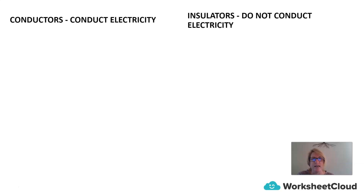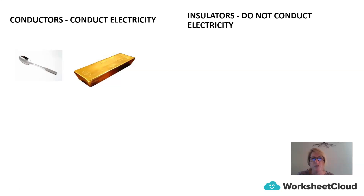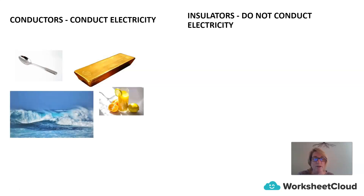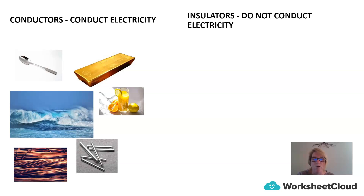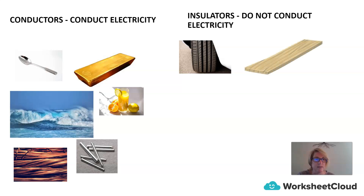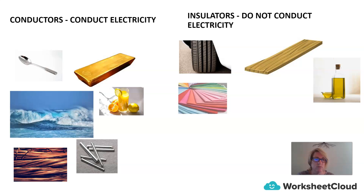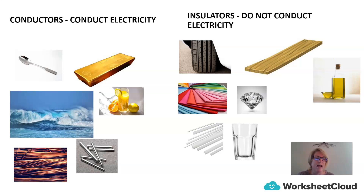When we look at electricity, it's important to look at the difference between conductors and insulators. A conductor is something that can conduct electricity, and an insulator does not conduct electricity. Things that can conduct electricity include objects made of metal — a metal spoon, a bar of gold, sea salt water, lemon juice, copper wiring, or steel rods. Insulators that do not conduct electricity include rubber tires, wooden planks, oil, fabric material, diamonds, plastic or perspex rods, and glass.